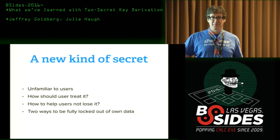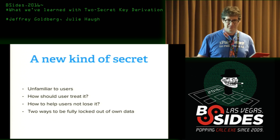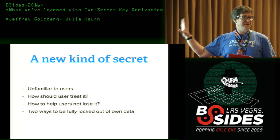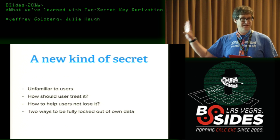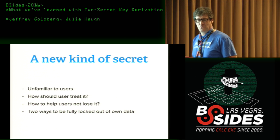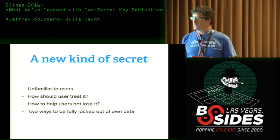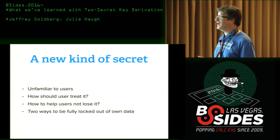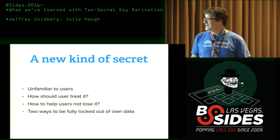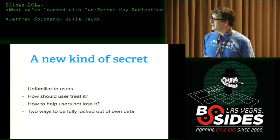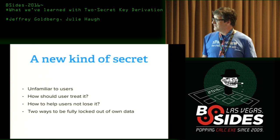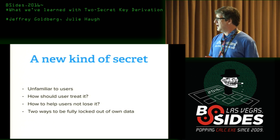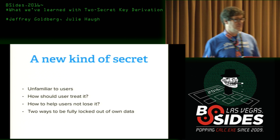I talked about the technology and key derivation at Cambridge. My concern here is we are presenting a new kind of secret to users, and we kind of hope that they behave in ways that help their security instead of harming their own interests. So the questions are: how do we get users to treat it properly? How can we help users not lose it?